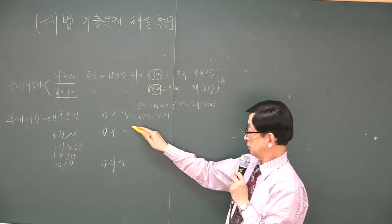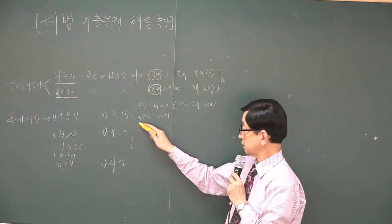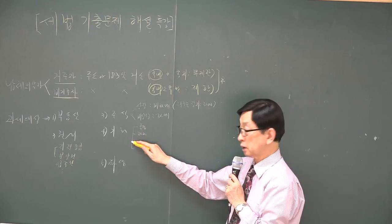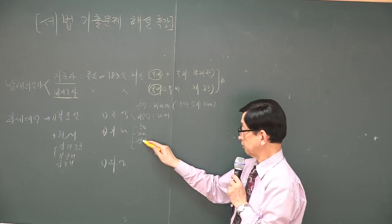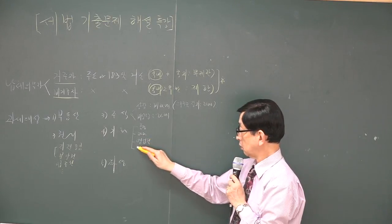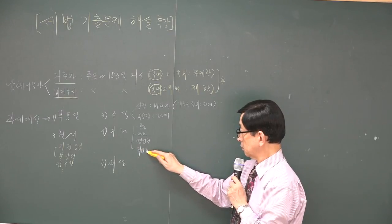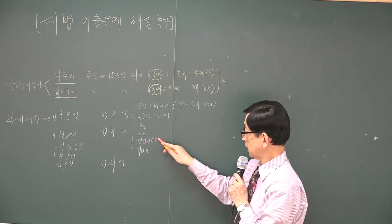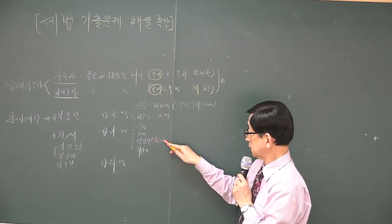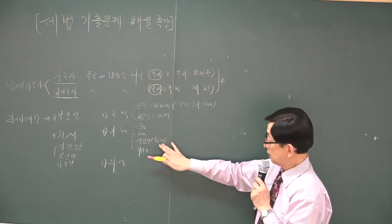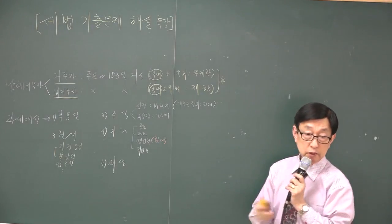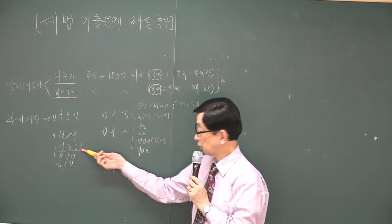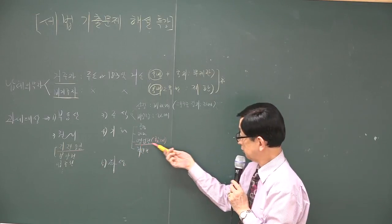기타자산은 네 개입니다. 특정 법인의 주식, 부동산 과다 보유 법인의 주식, 권리금(영업권), 골프 회원권 등입니다. 조심할 것은, 영업권은 반드시 점포와 함께 양도하는 영업권에 대해서 양도세를 내야 됩니다 - 사업용 고정자산과 함께 양도하는 영업권이어야 합니다.